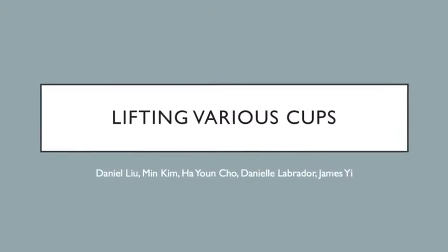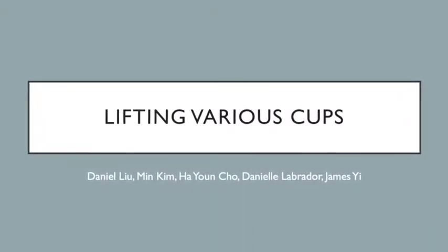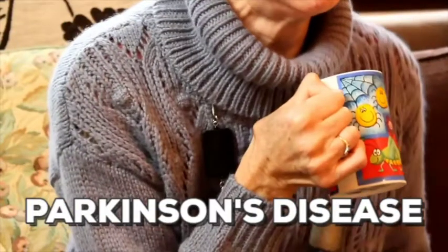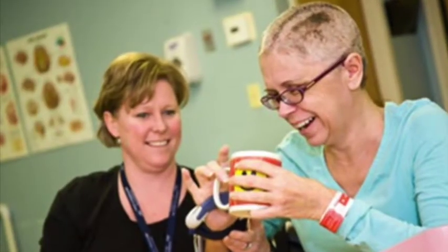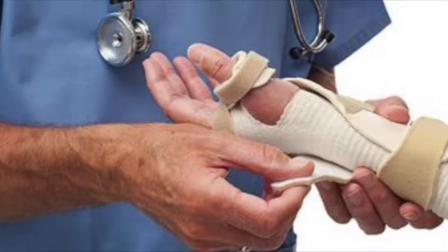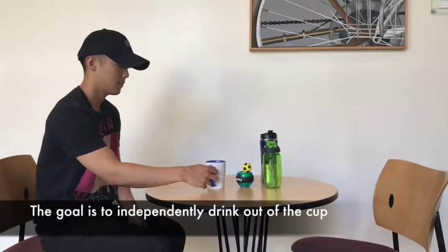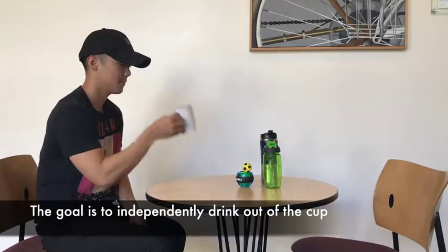This instructional video is intended for individuals who have lost upper extremity function through events such as Parkinson's disease, stroke, or other injuries. The end goal is to have the individual independently drink out of different types of cups while sitting.